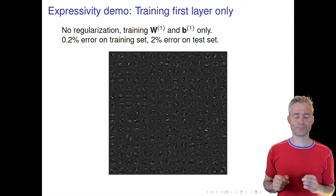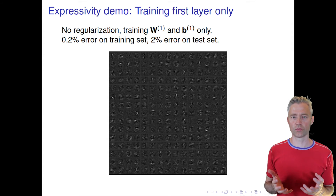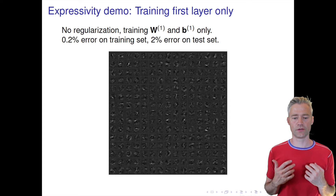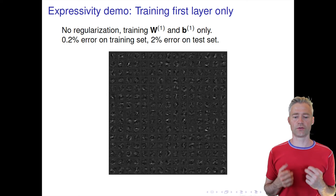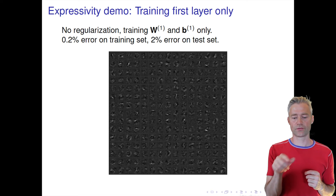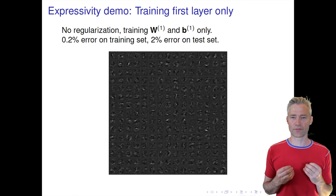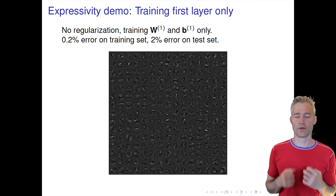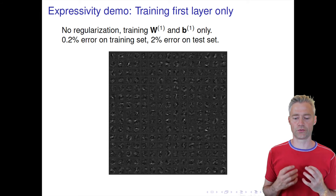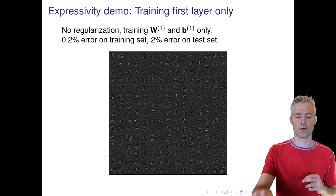Here's another example where we have trained only the first layer — our running sample with MNIST. We can achieve quite a small error on the training set, but we have a 2% error on the test set. If you look at the weights represented as input images, you can see they have adapted more to the actual details in the training set, whereas we really want to adapt to more global features. This is a signature of overfitting, and this is what we want to avoid.